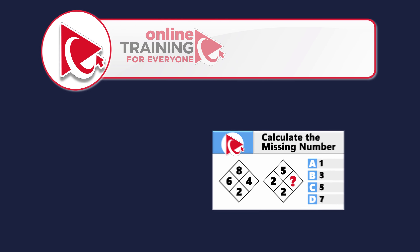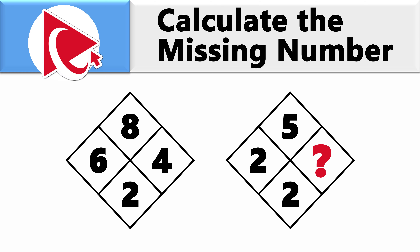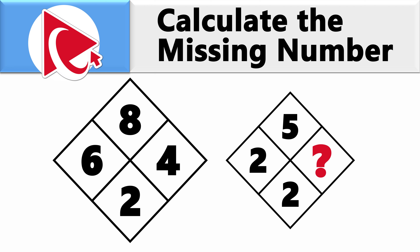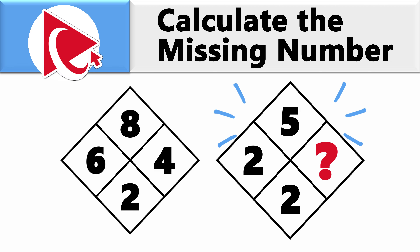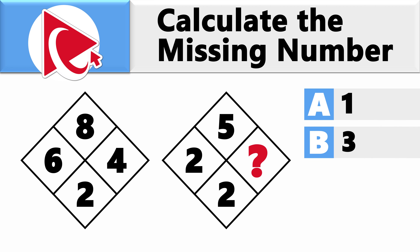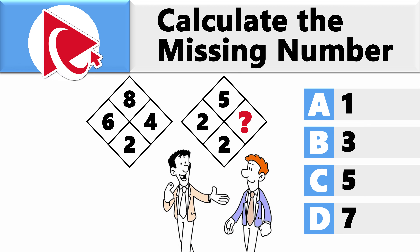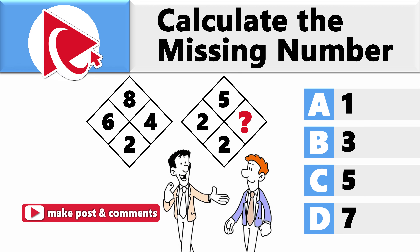Now it's time to grab your thinking goggles. This question is so intricate, Sherlock Holmes would need a cheat sheet. You're presented with two diamonds, each with four numbers inside. In the first diamond, the numbers are 8, 6, 2, and 4. In the second diamond, the numbers are 5, 2, 2, and then comes the missing number, which you need to calculate and select from four choices: choice A is 1, choice B is 3, choice C is 5, and last but not least, choice D is 7.